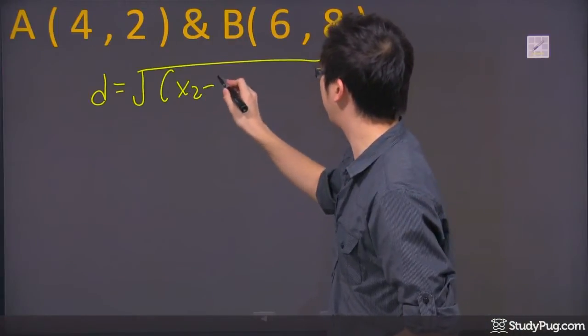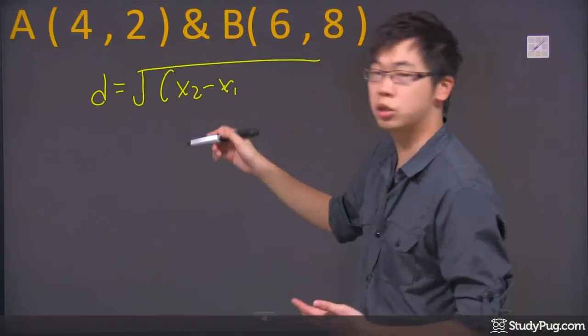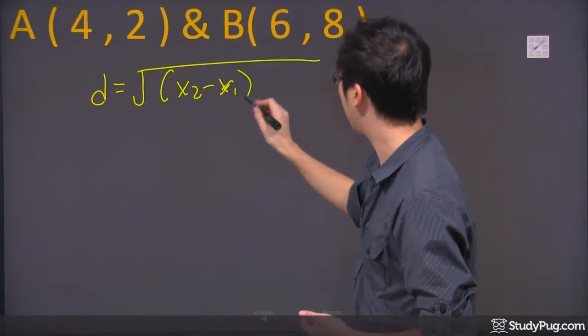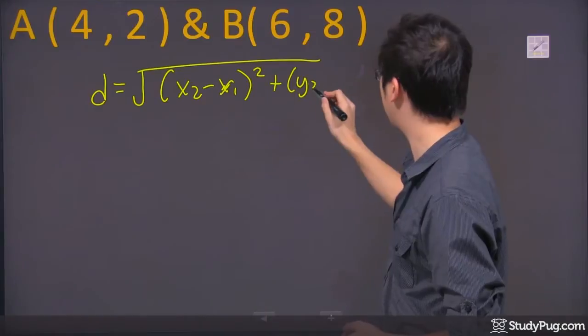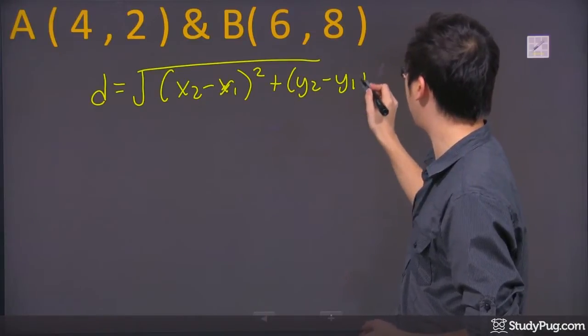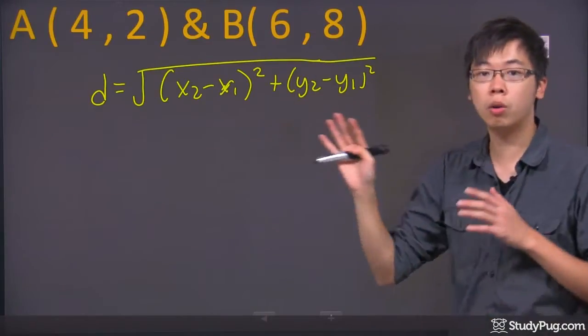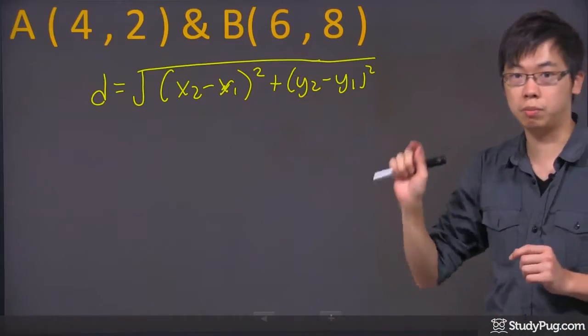You can find it on your formula sheet. It's x2 minus x1, and we're going to square that, plus y2 minus y1, and square that. They're all underneath the square root symbol.